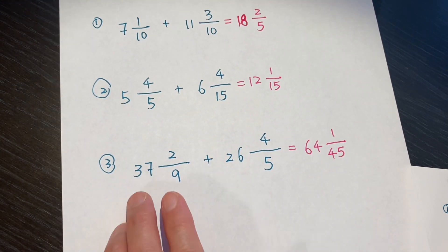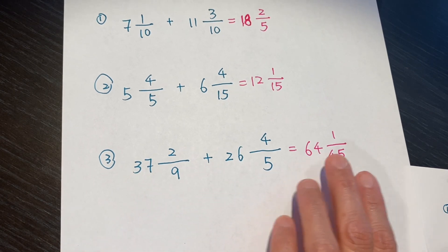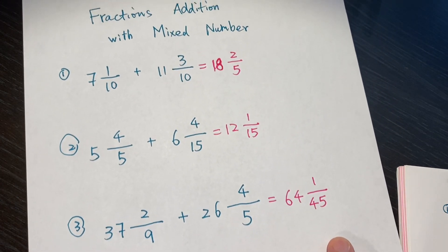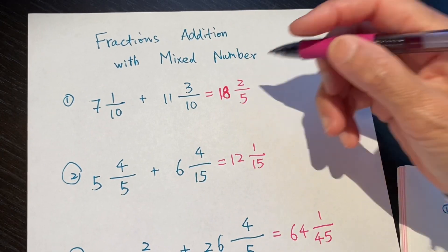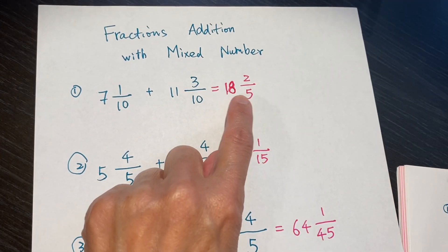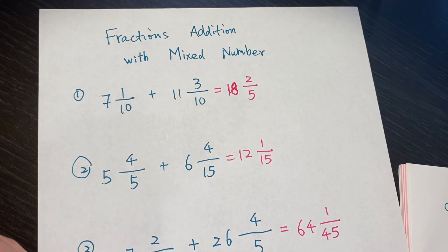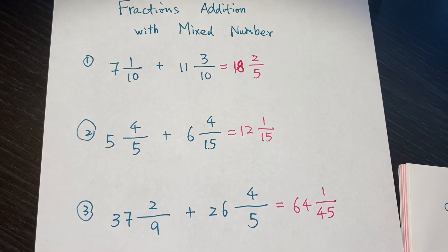The third one, 64 and 1 over 45. This one is written a little bit, not so easy to see. 18 and 2 over 5. So, let's take a look. If you are right, you do not need to listen to me any further. If not, we will keep on learning. I will explain it.